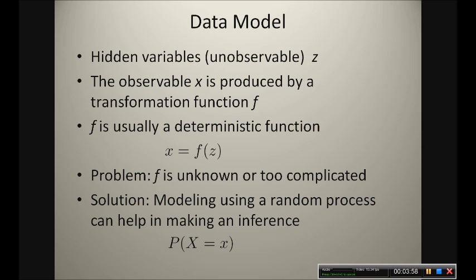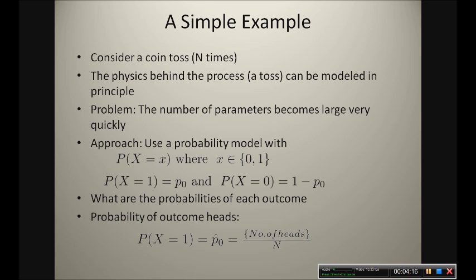Consider an experiment where you toss a coin n times. The process of this coin toss can be analyzed using physics — basically you have to know the weight of the coin, the height at which it is tossed, the force with which it is tossed, and so on. So instead of trying to track all these physical parameters, it is much easier to model the outcome of a coin toss using a probability model.